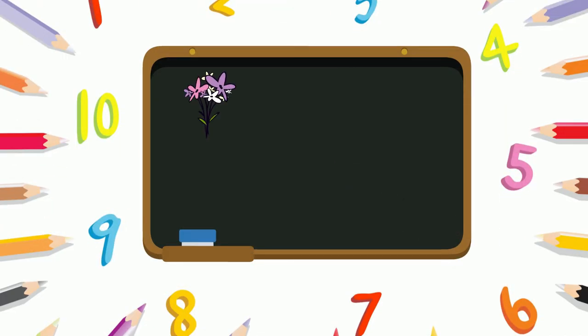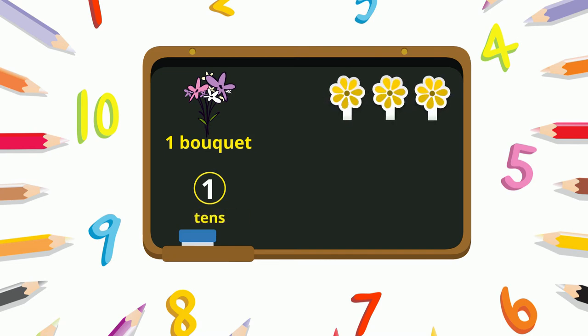Suppose one bouquet of flowers, which is one ten, and three separate flowers, which is three units, are placed on a table. How many flowers are on the table in total? We will add ten and three. So, ten flowers in the bouquet, and then eleven, twelve, and thirteen.